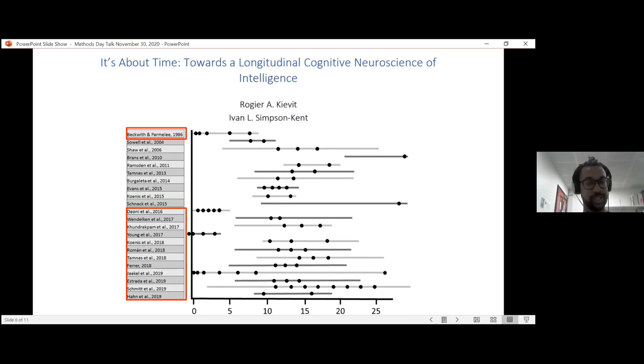And basically, this field, at least in intelligence research, seems to be very in its infancy. You have one pioneering study in the mid-80s, but most of these studies come within the last five years or so, where you have both brain and cognitive data at multiple time points. But it's very important because, for example, we cannot -